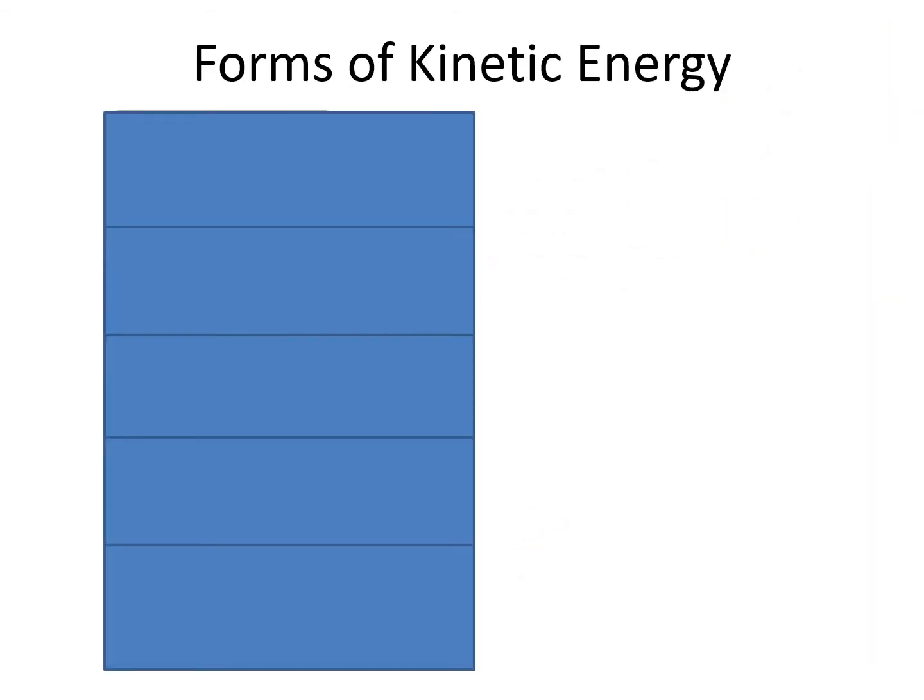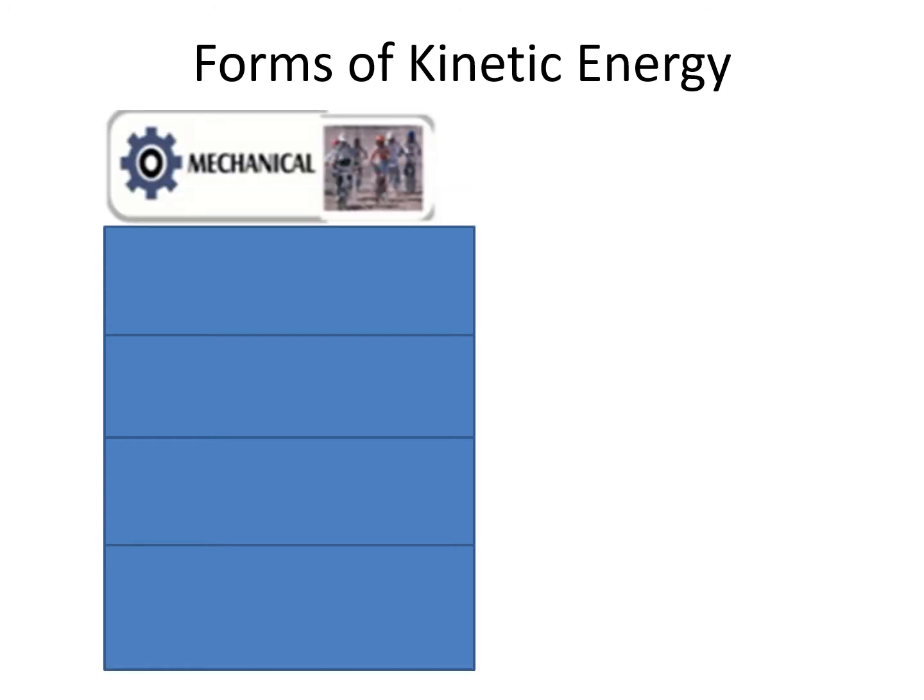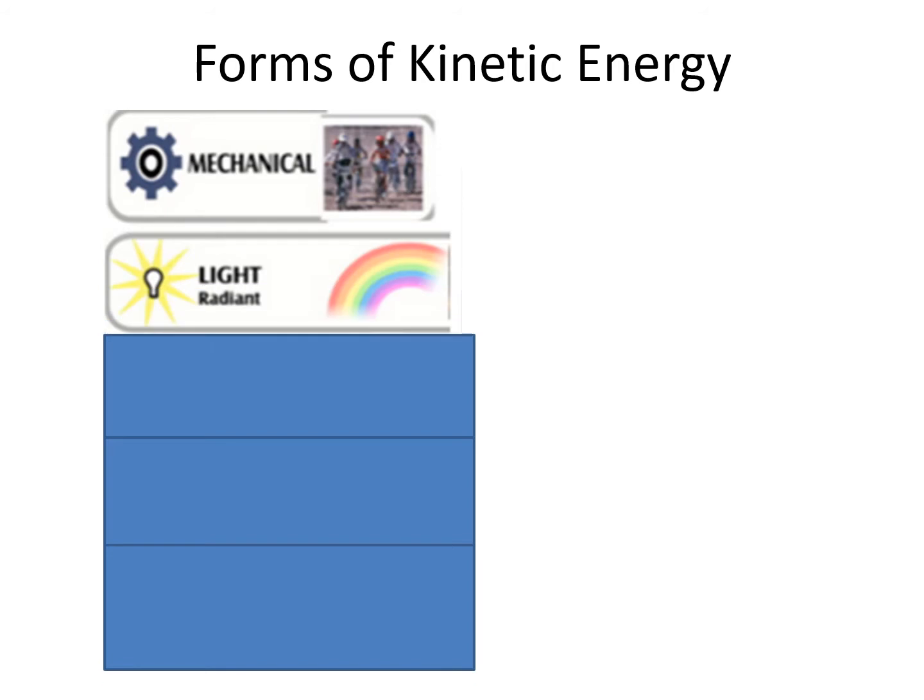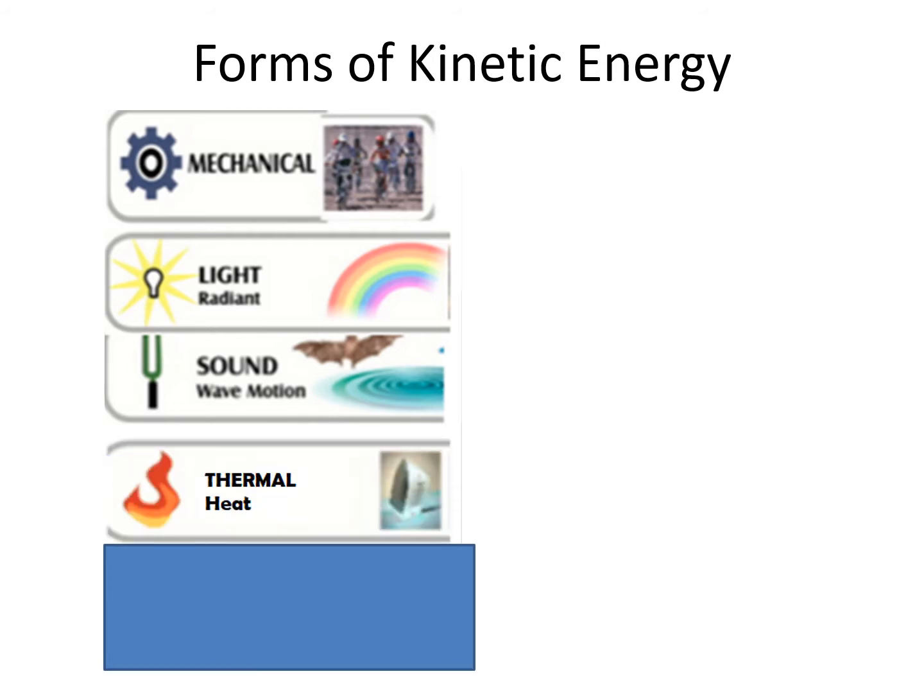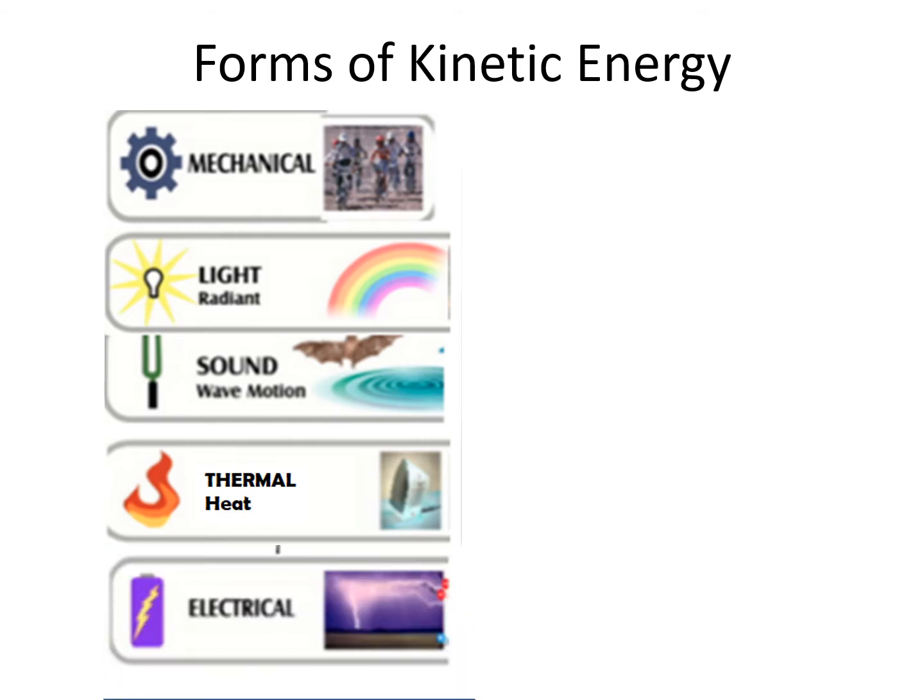Kinetic energy may be in the following forms: mechanical, like riding a bike; light or radiant, like sunlight; sound, which is a wave motion, like the vibration of a tuning fork or the bat's sending sound; thermal, which is transferred through heat; and electrical energy, like lightning.